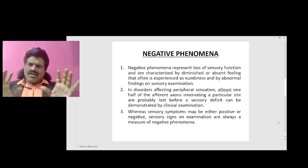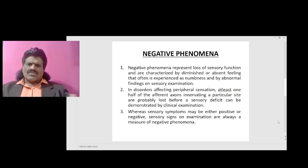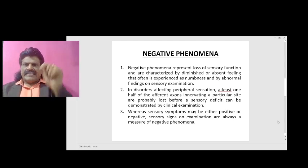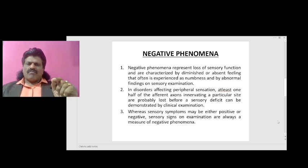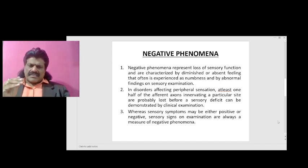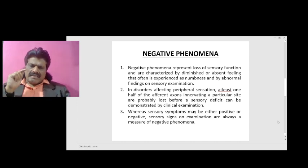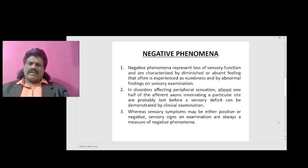Negative phenomena represent loss of sensory function and are characterized by diminished or absent feeling, often experienced as numbness, with abnormal findings on sensory examination. In disorders affecting peripheral sensation, at least one half of the afferent axons — that is, 50 percent of axons innervating a particular site — are probably lost before a sensory deficit can be demonstrated by clinical examination.